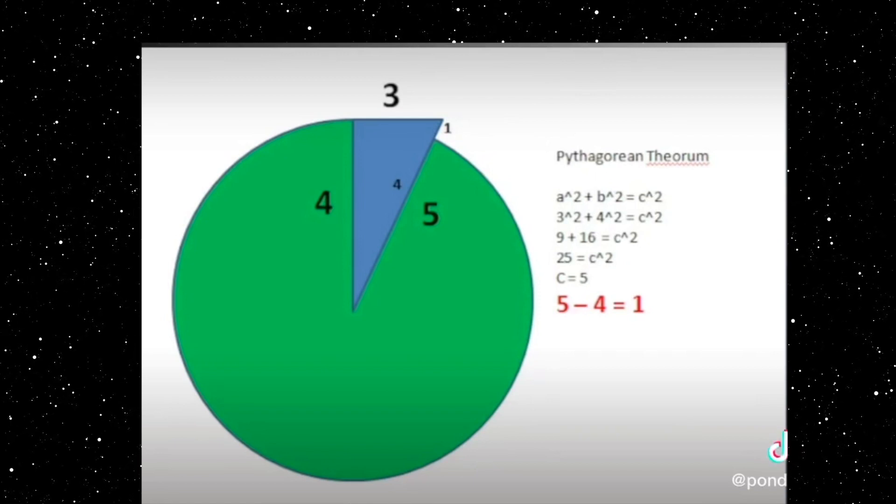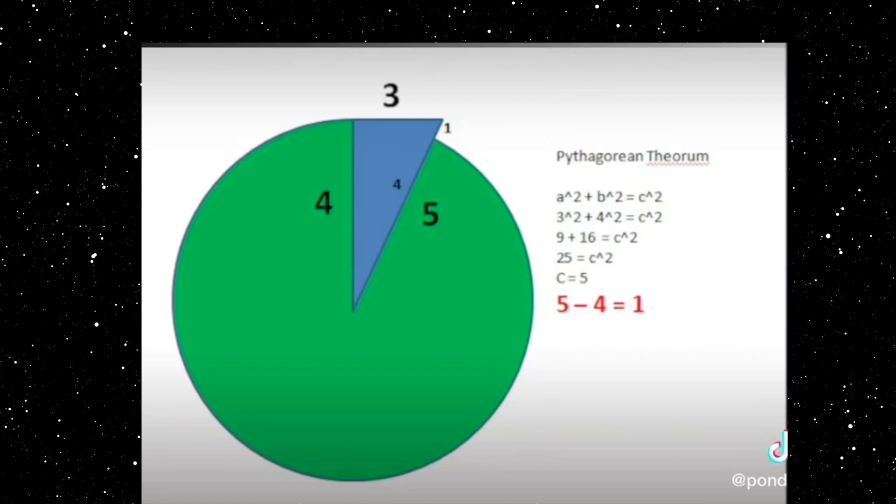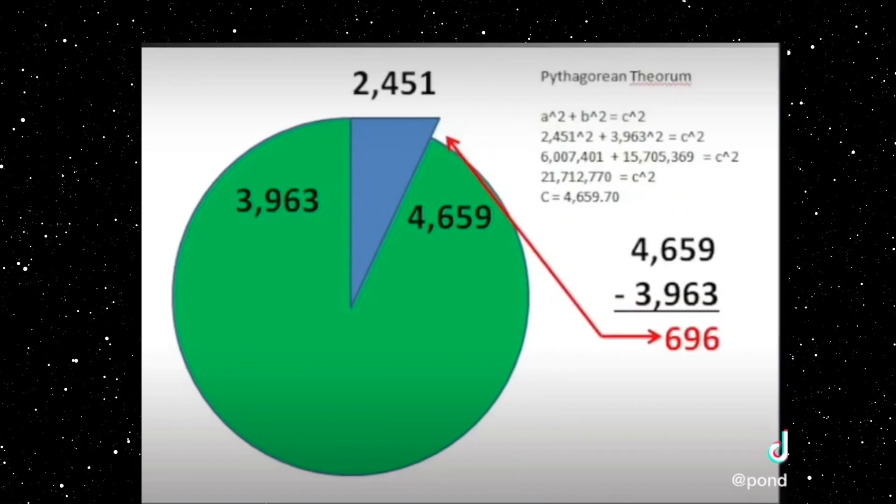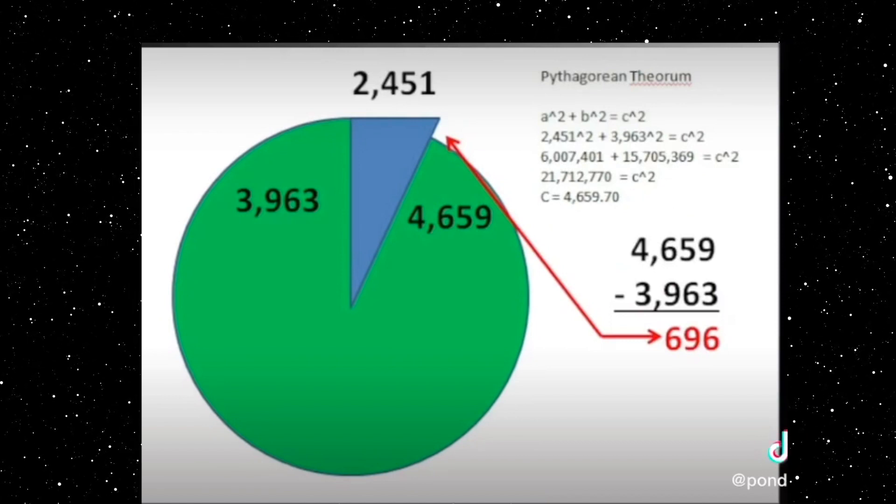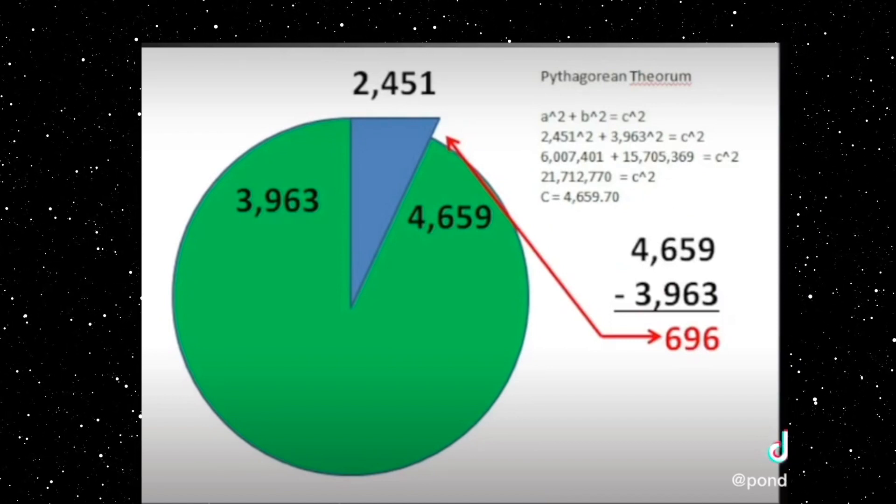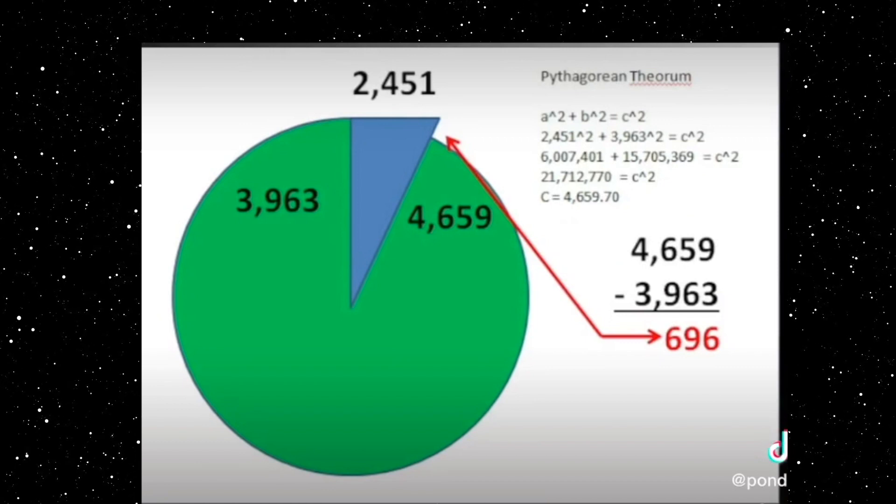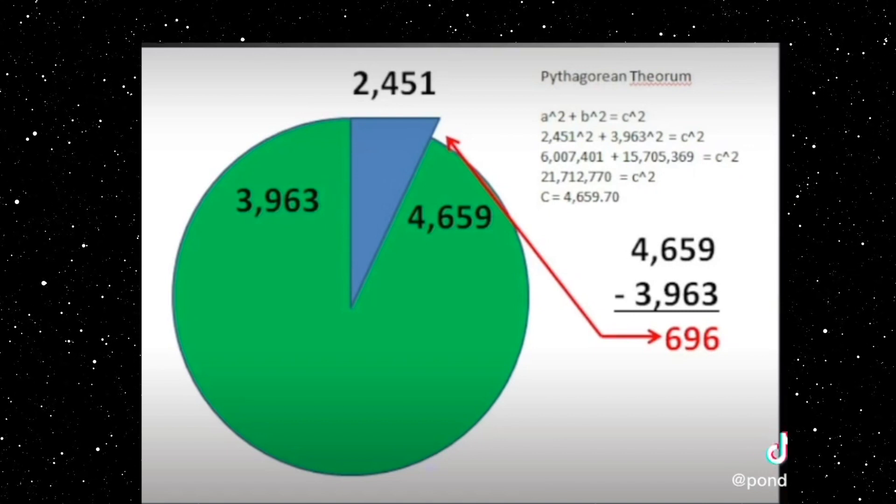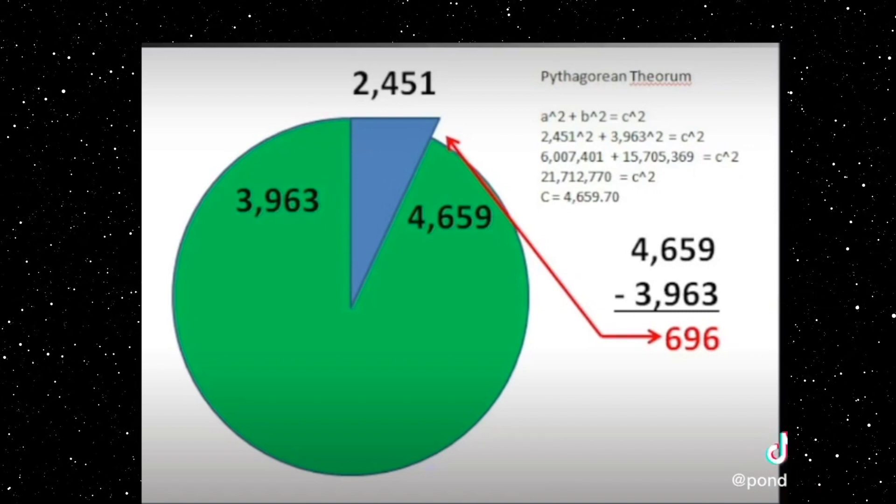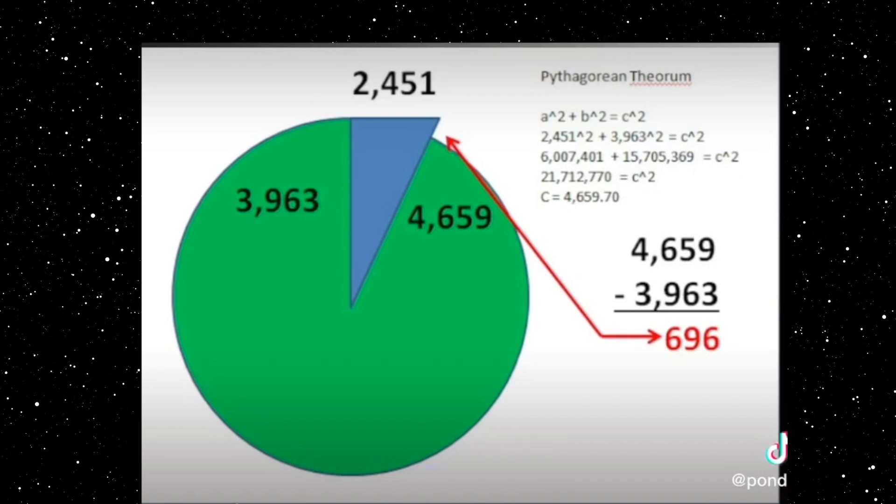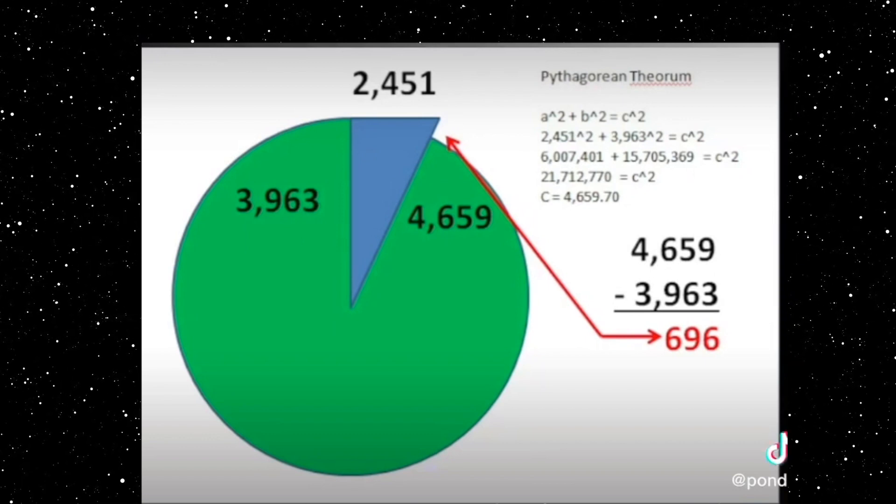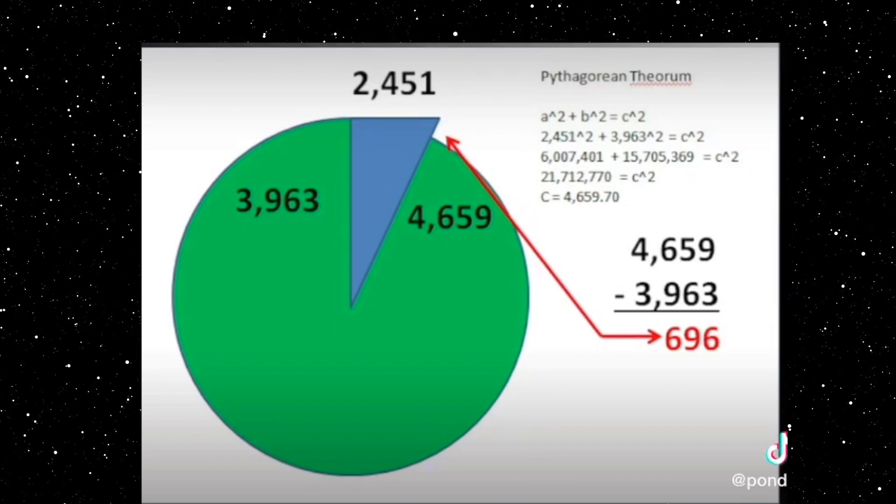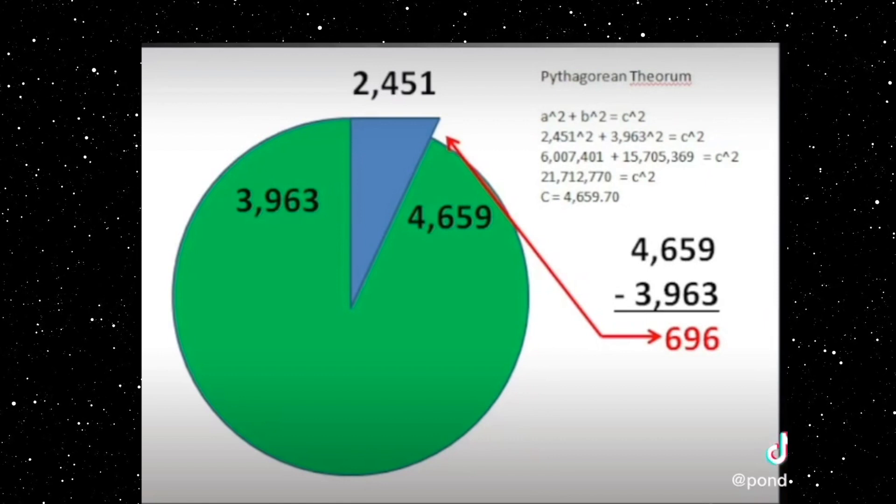And you're left with the remainder of one. Let's plug in two thousand four hundred fifty-one, three thousand nine hundred sixty-three, and the hypotenuse is four thousand six hundred fifty-nine. Subtracting out the three thousand nine hundred sixty-three, we get six hundred ninety-six.